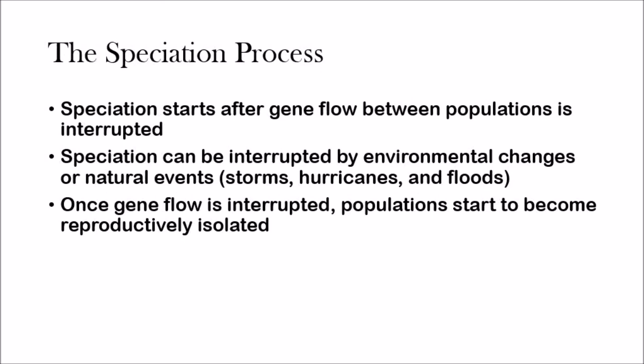Now let's review how the speciation process occurs — this is a recap from the previous video. Speciation starts after gene flow between populations is interrupted, meaning there is no more flow of genes between two populations and you see this cutoff of gene flow. Speciation can be interrupted by environmental changes or natural events like storms, hurricanes, and floods. Once the gene flow is interrupted, populations start to become reproductively isolated and that's how new species are formed.